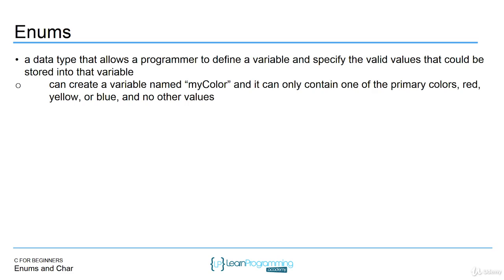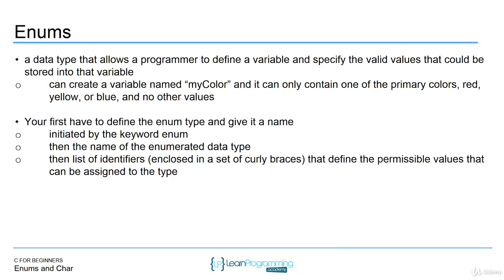You're going to have to define the data type and then create variables of that type. The enum keyword is used for both. The first thing you have to do is define that enum type and give it a name — just an identifier, like a variable name. You use the enum keyword, then provide a name, and then put all the valid values inside curly braces.